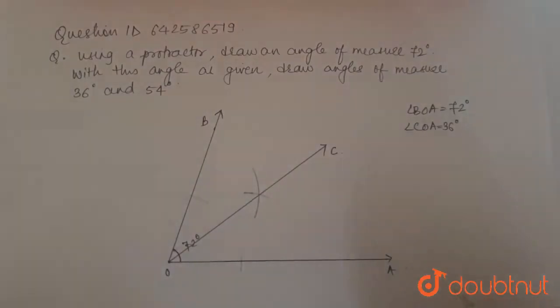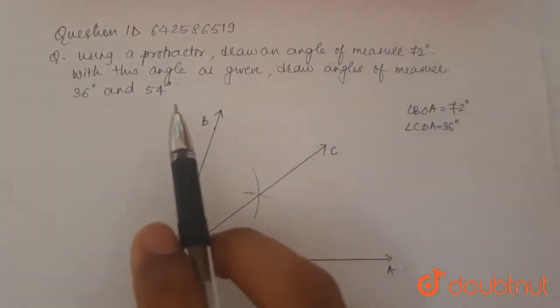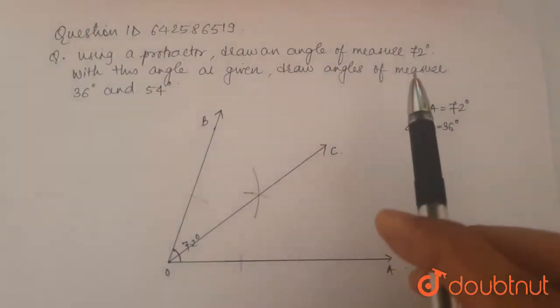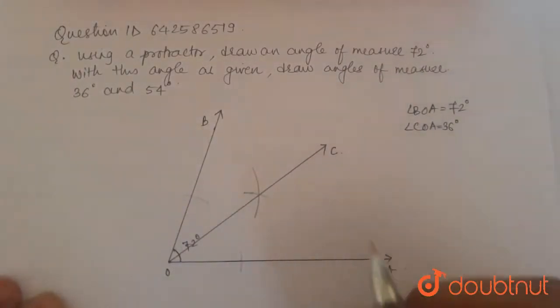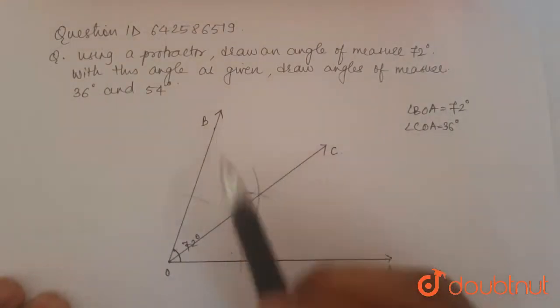Now we have to make an angle of 54 degrees with the angle of 72 degrees that is BOA as given. To do that, we will bisect this angle BOC.